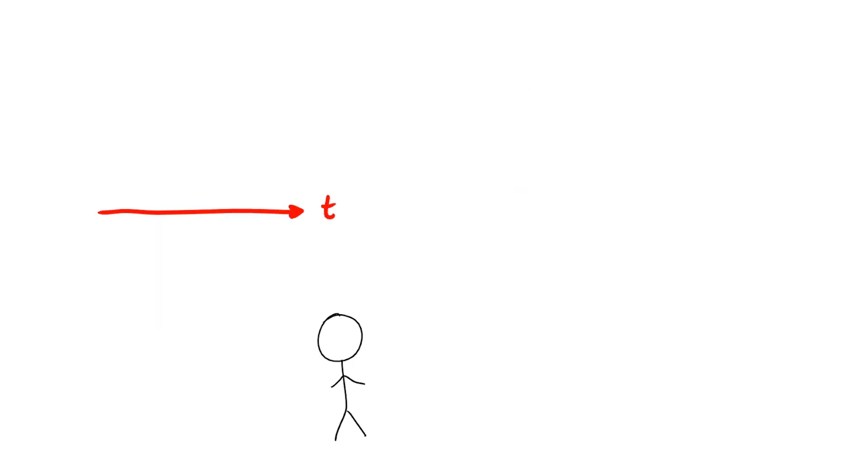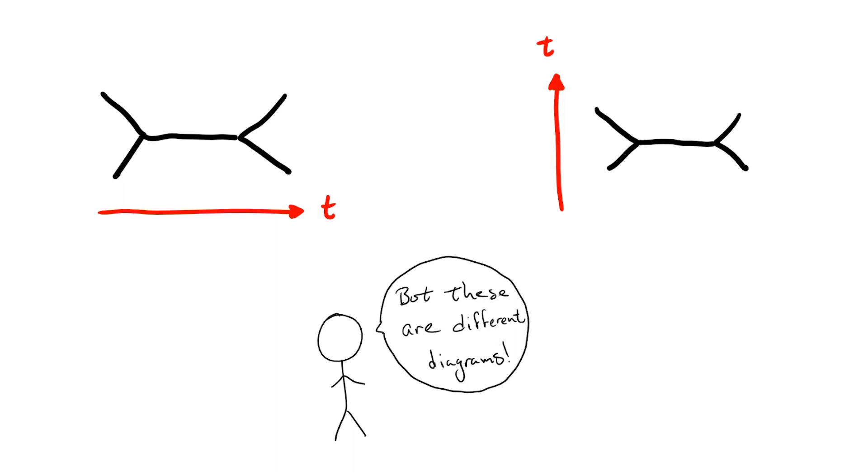This is one of the places where Feynman diagrams can be confusing. Some people prefer to have time running left to right, while some prefer to have time running from bottom to top. It's important to know which of these we're dealing with, since the same diagram can correspond to different processes altogether in these different conventions.